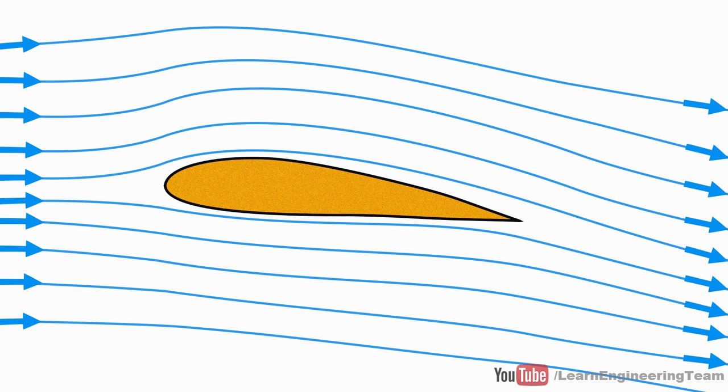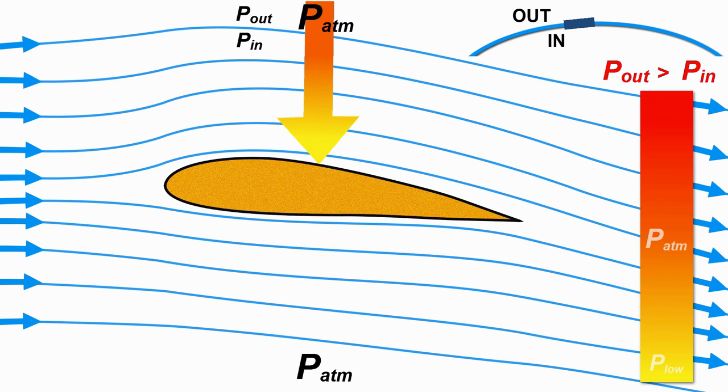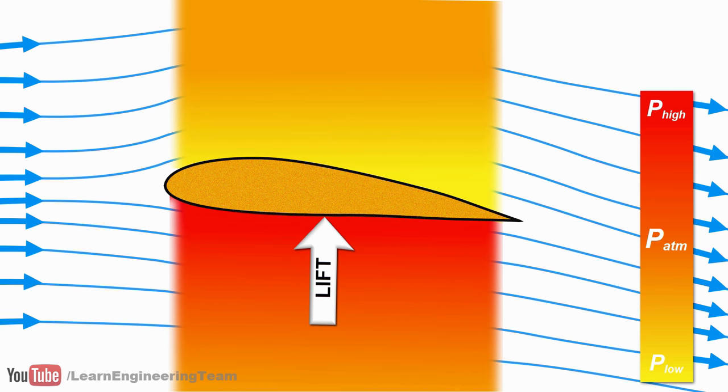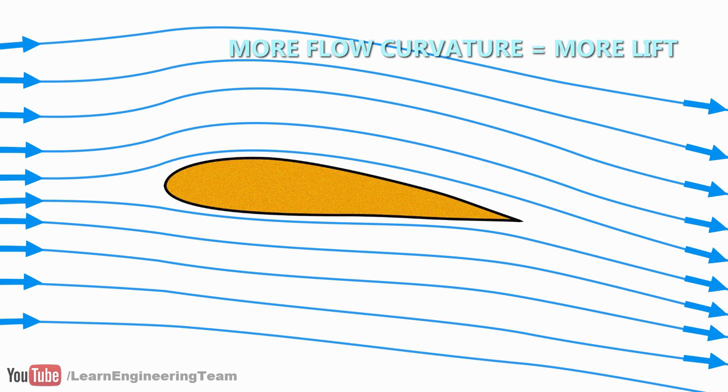Far away from the airfoil, the pressure is atmospheric. We know in a curved flow, the outside pressure should be larger. So at the top, the pressure will decrease as we move towards the airfoil. On the other hand, at the bottom, and for the same reason, pressure should increase as we move toward the airfoil. This difference in pressure is what causes the lift. Basically, the introduction of the airfoil makes the flow curved. This curvature generates the pressure difference and the lift. This means that more curvature translates to more lift.